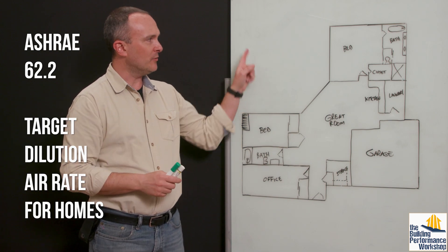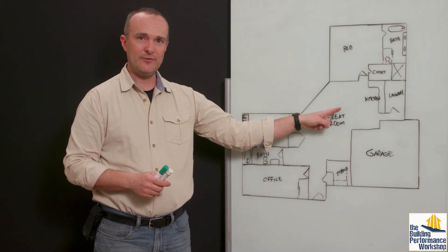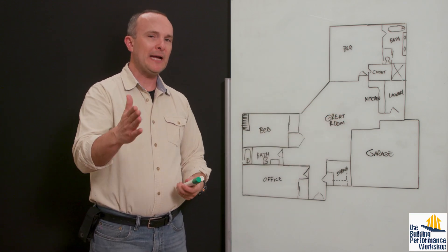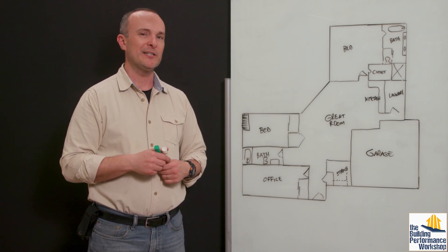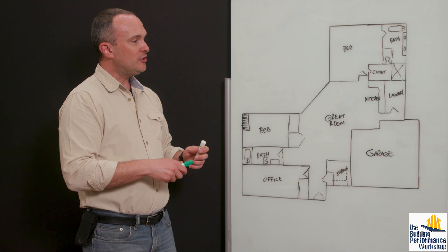Dilution air, remember, is air that we're bringing in from outside into the house to dilute the pollution that's happening here because we are polluters. If you are going to live in a house, it's going to be polluted because we're gross. So you're going to need two things. You're going to need supply air and you're going to need exhaust.